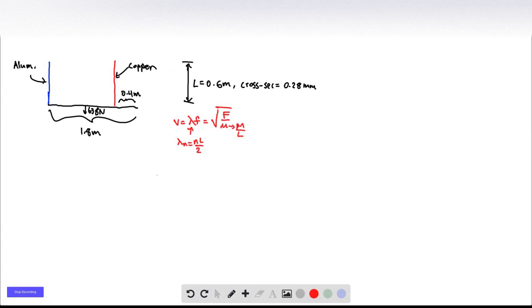So first, let's calculate the wavelength. So the wavelength is going to be the fundamental frequency. So N is equal to 1, and that's just going to be L over 2, which is 0.3 meters here.